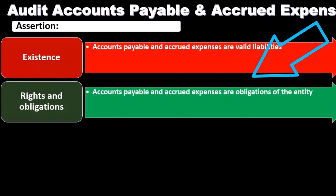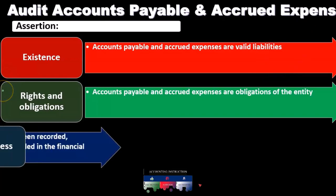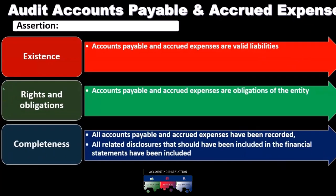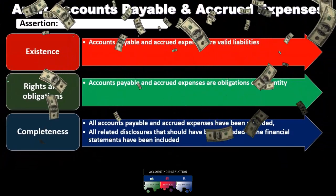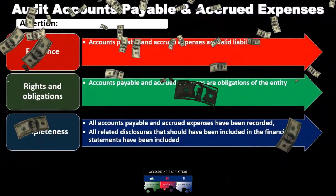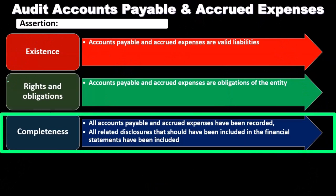Accounts payable and accrued expenses are valid liabilities — that is what we're assessing with the existence assertion. For rights and obligations, accounts payable and accrued expenses are obligations of the entity. The completeness assertion requires that all accounts payable and accrued expenses have been recorded, and all related disclosures that should be included in the financial statements have been included.